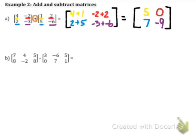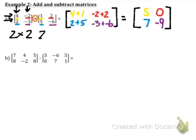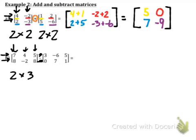In part B, we have a two by three and also a two by three matrix. So we can subtract these two matrices. To define your matrix, you look at the number of rows and the number of columns — so two rows by two columns gives you a two by two. Because both matrices have the same exact dimensions, you can add or subtract them together.